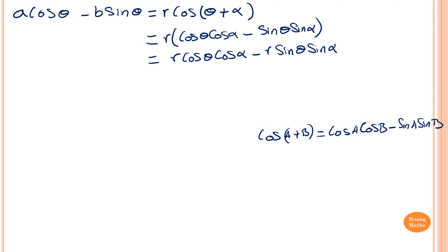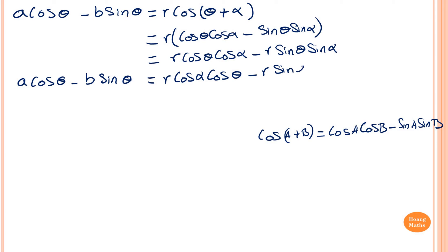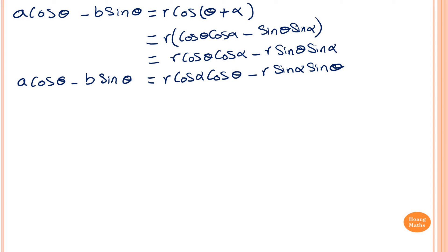So this means a·cosθ − b·sinθ = r·cosα·cosθ − r·sinα·sinθ. Now to compare the coefficient of cosθ: a·cosθ equals r·cosα·cosθ. Since r·cosα and A are constants, A = r·cosα. I name this equation number one. Then comparing the coefficients of sinθ: −B = −r·sinα. This is equation number two.